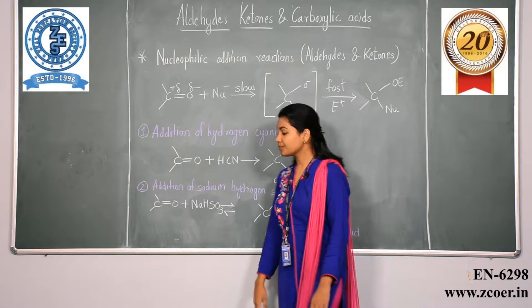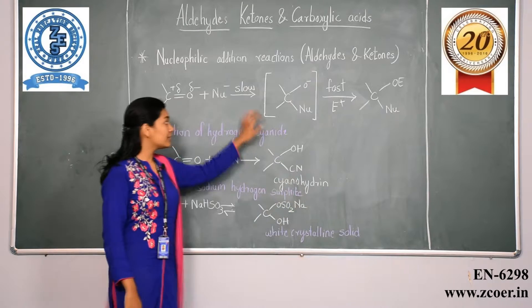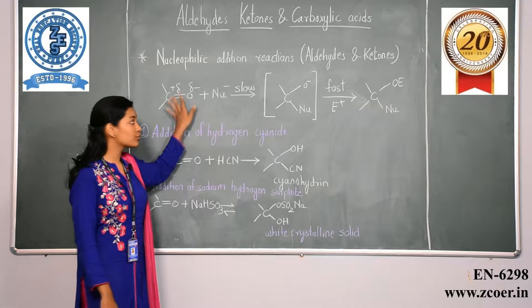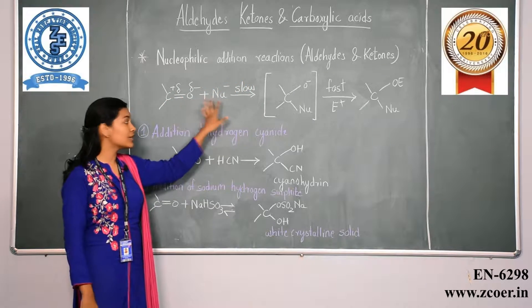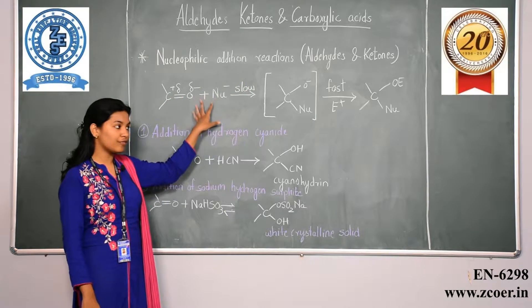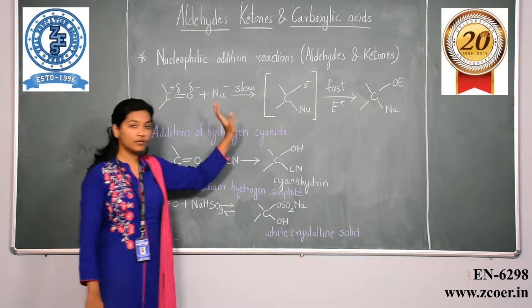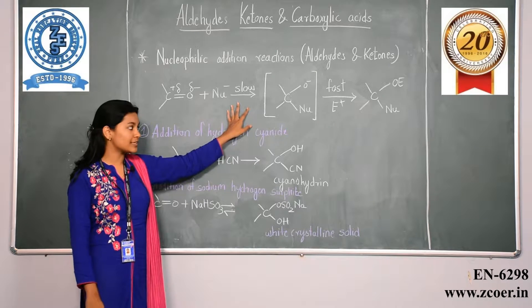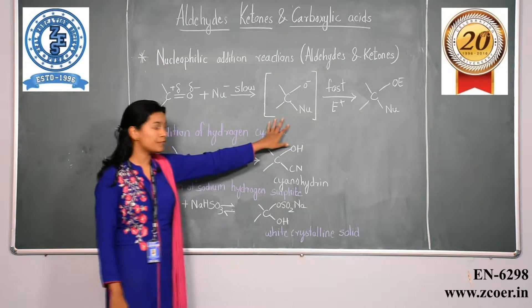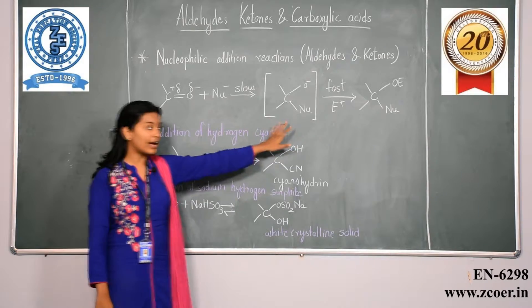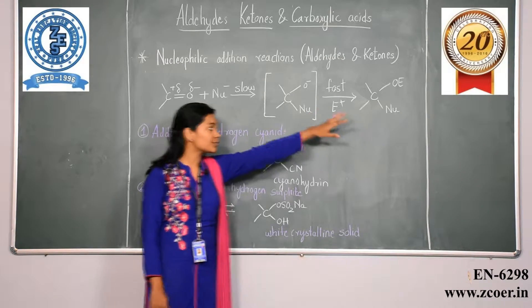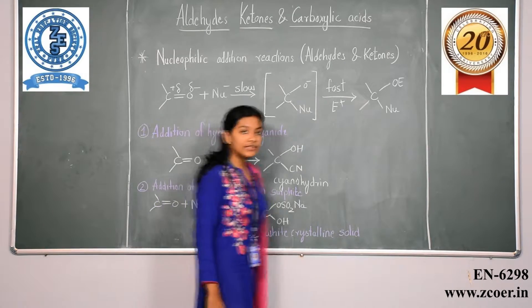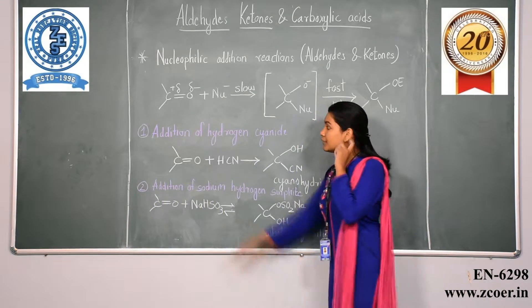The general expression for this reaction shows that the aldehyde or ketone group reacts with a nucleophile in a two-step process. The first step is a slow process that gives an intermediate product, which then undergoes a fast second step to give the final resulting product.